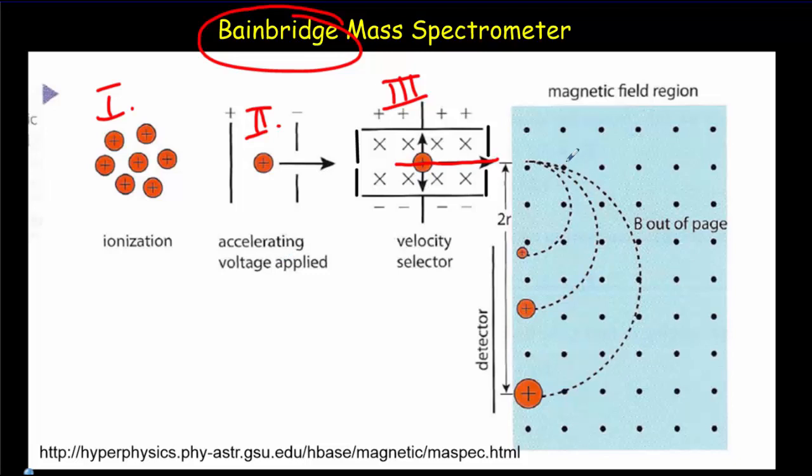They will then go into a fourth region where there's a magnetic field. And they will execute circular motion. And the different isotopes will be separated. And it will be possible then to determine the mass of each isotope of that elemental gas. So now let's look at each region in a little more detail.